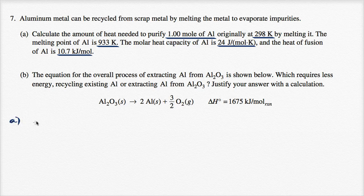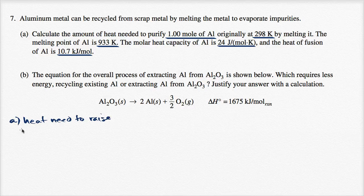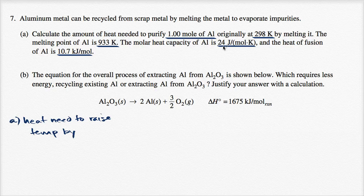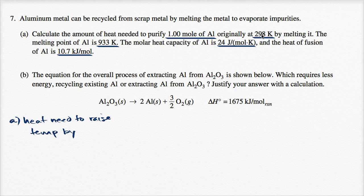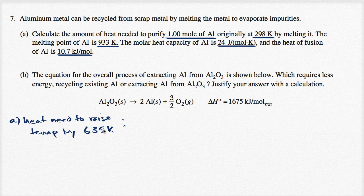Heat needed to raise temperature by... How much are we raising the temperature by? We're going from 298 to 933. So if you raise by two, you get to 300, and then you have to raise by another 633. So we're raising our temperature by 635 Kelvin. That's to get us to the melting point.